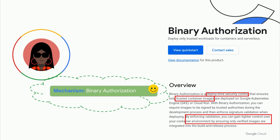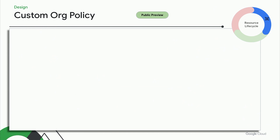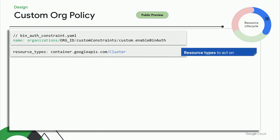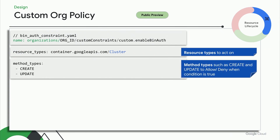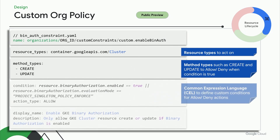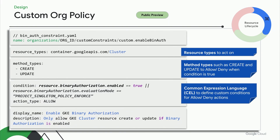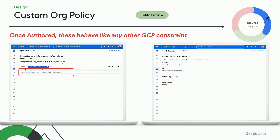With custom org policy, Taylor can now author a custom guardrail for GKE cluster resource type. For the create and update methods, using common expression language-based conditions to deny creation or update of clusters that do not have authorization enforced. Once authored, these guardrails behave like any other GCP policy and can be enforced using the console, GCloud, or existing CI/CD pipelines.